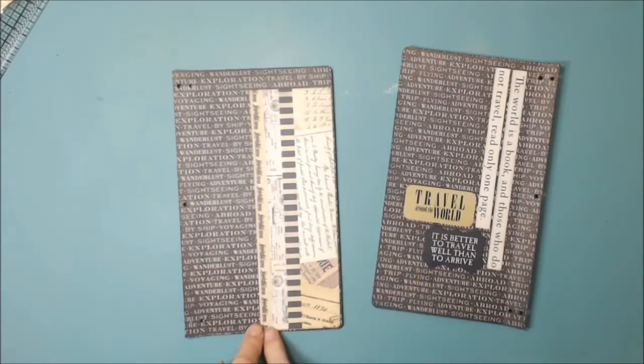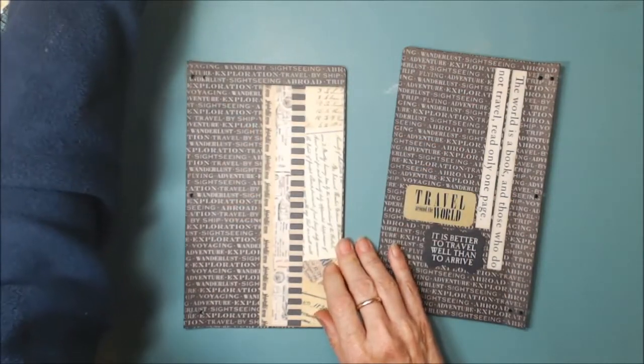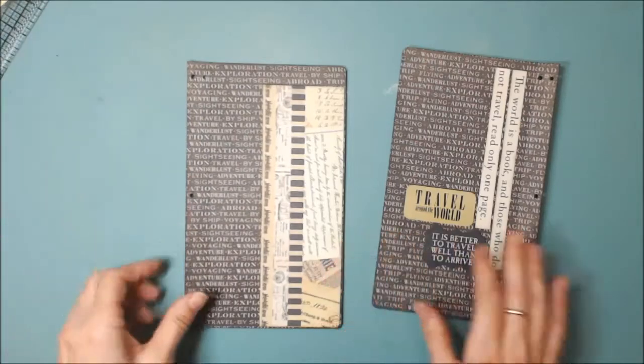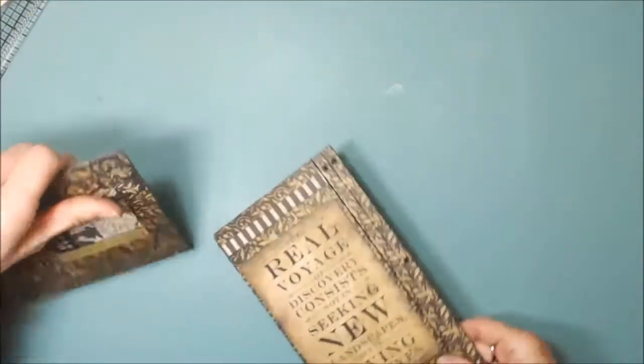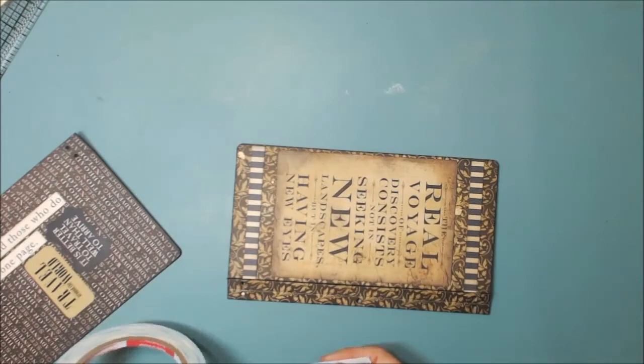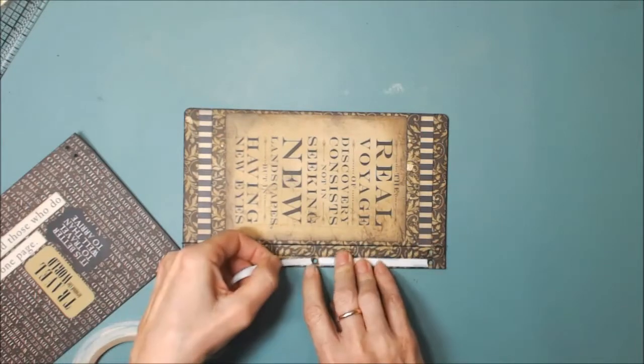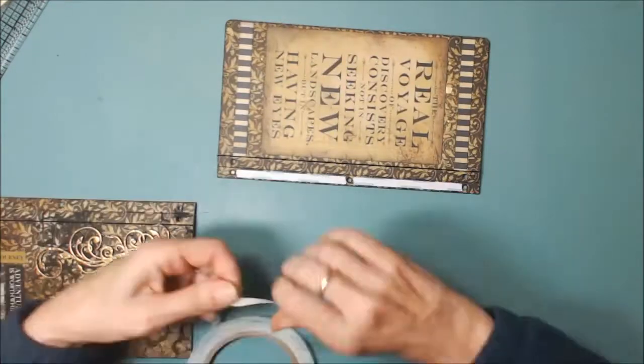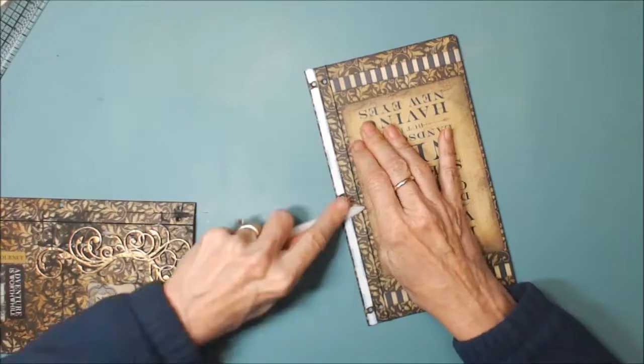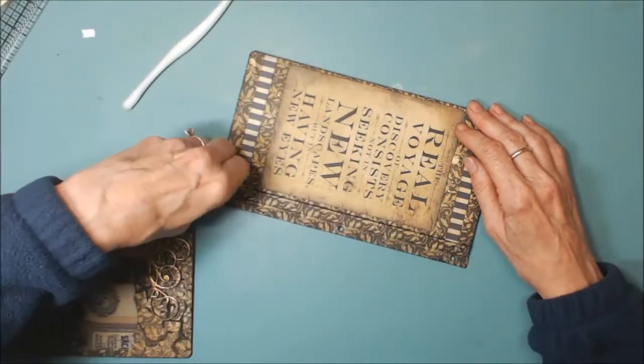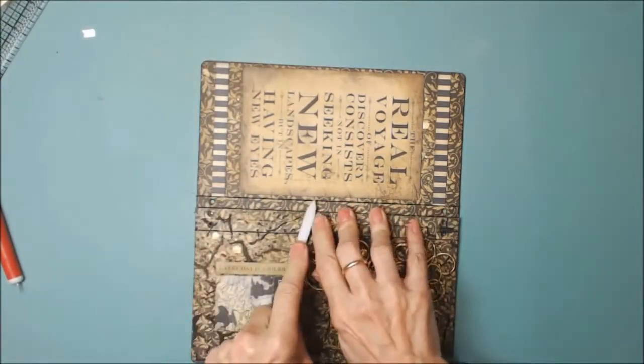So all I did was I put score tape on this and this edge and here you can slide something in if you want to. So that's how you do that. Now the front is going to lap over the back. So I'm going to use some quarter inch score tape. And then just press them together.